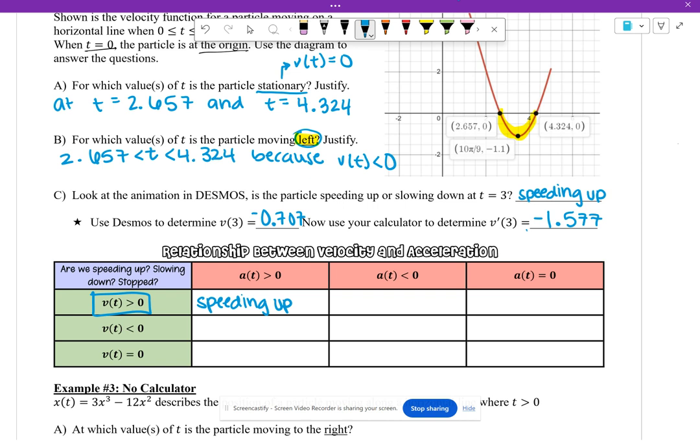However, if velocity is positive, but acceleration is negative, then our particle is slowing down. If velocity is positive and acceleration is zero, we've got a constant speed. There is no acceleration, there is no slowing down.